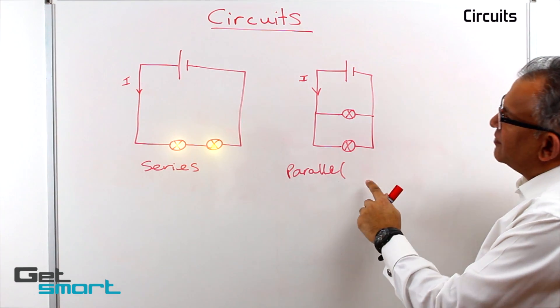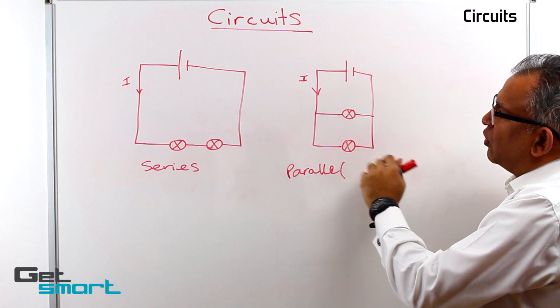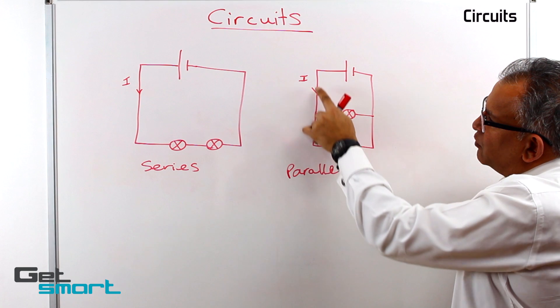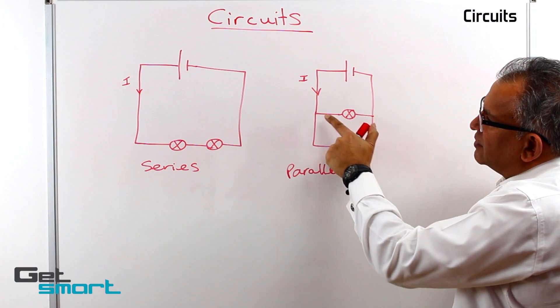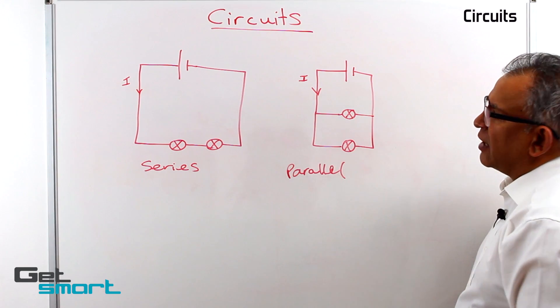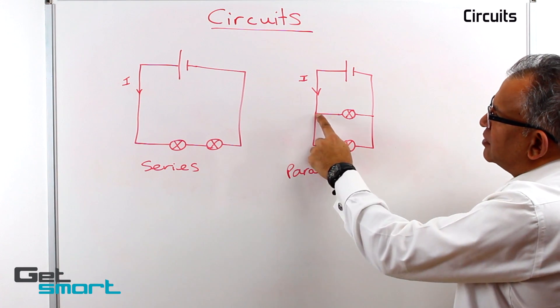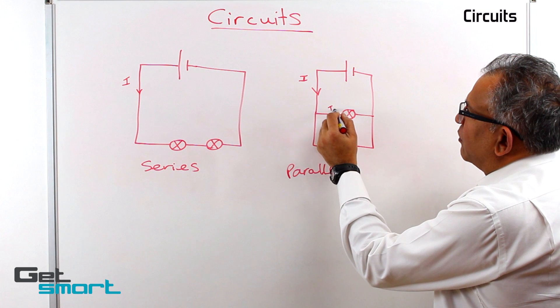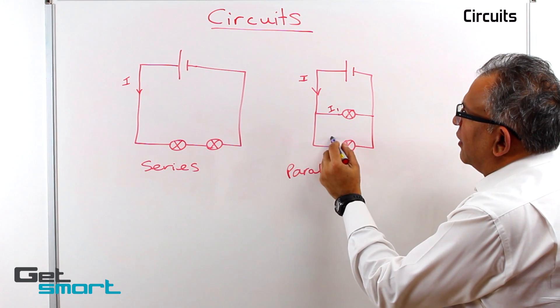In a parallel circuit, the two bulbs are organized in such a way that there is a branch which allows the current to split. The current then splits into two different currents. This we call I1 and I2.